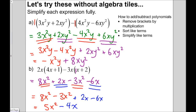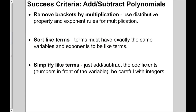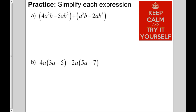Those steps are exactly the success criteria: remove the brackets using the distributive property, sort out the like terms — remember like terms have the same variable and exponent — and then simplify by adding and subtracting the coefficients, which are the numbers in front of the variable. Be careful with integers; use a calculator if you need to. Try these two expressions, simplify them following the success criteria. Pause the video, give them a try, and when you're ready press play.